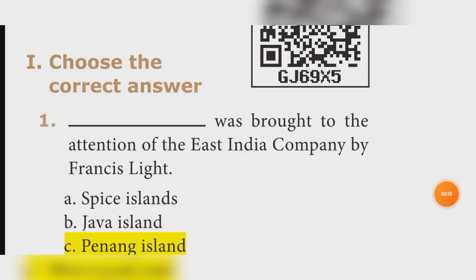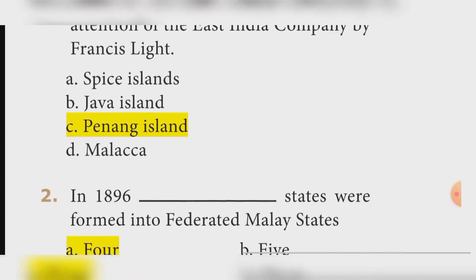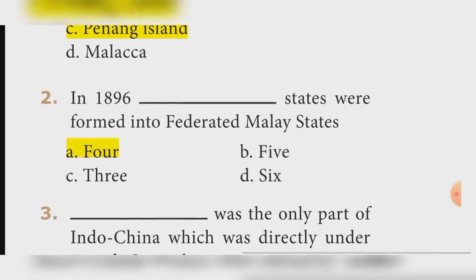First question: Choose the correct answer. Question one — Penang Island was brought to the attention of the East India Company by Francis Light. The correct answer is Option C: Penang Island.